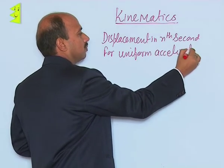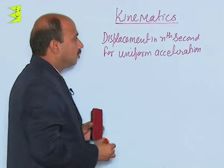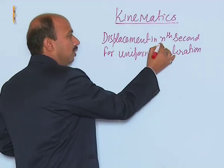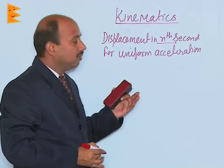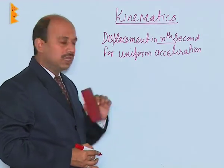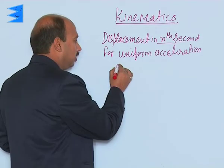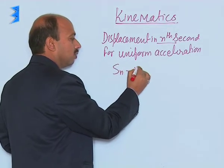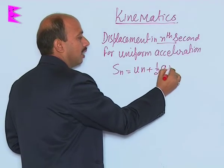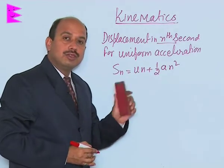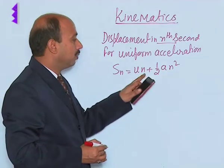Now see here, if you want to calculate displacement in n-th second, we have to use the displacement-time relation. Suppose in n seconds, displacement is Sₙ = uN + ½aN². I have used the displacement-time relation and in place of time I have put n.